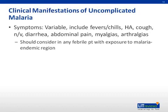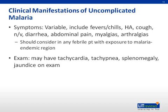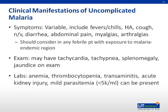Note that fevers are initially irregular and paroxysmal, but later in the course of infection become synchronous with schizont release. Fevers occur every 48 hours with Plasmodium ovale, falciparum, and vivax infection, and every 72 hours with Plasmodium malariae infection. On exam, patients may be tachycardic and tachypneic, jaundiced, and have splenomegaly. Abnormal laboratory findings may include anemia, thrombocytopenia, transaminitis, mild acute kidney injury with elevated BUN and creatinine, and mild parasitemia.